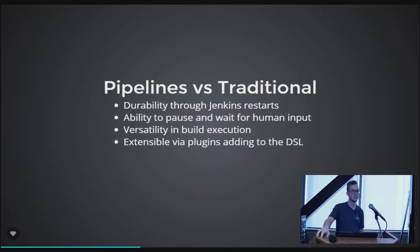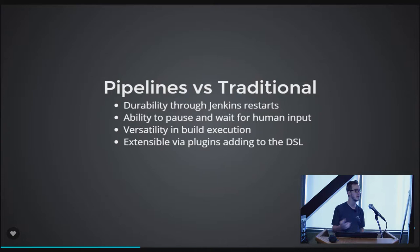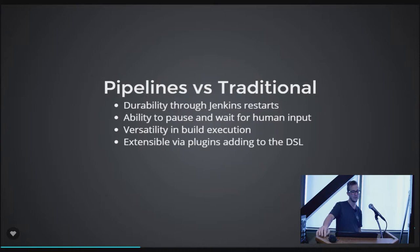You can also pause and wait for human input, which you can't do mid-run in a traditional job. For example: build, test, and deploy to development automatically, kick off regression testing, then wait for an authorized person to approve the deploy to production — whether that's 24 hours or a week later. An authorized person clicks yes in the CI, and it runs the production deploy step, all tied to that build's full history.